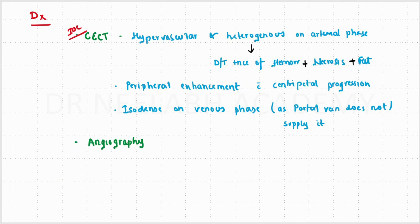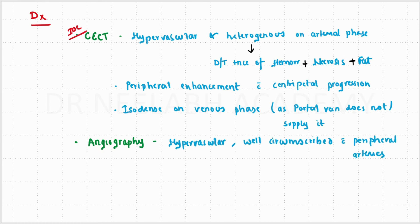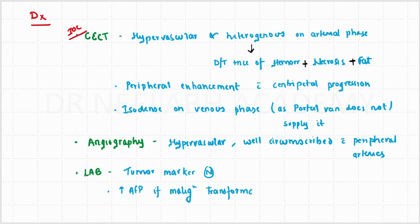Next can be angiography, on which we can see a hypervascular well-circumscribed lesion with peripheral arteries. On laboratory investigations, the tumor markers are normal. But if there is malignant transformation, alpha-fetoprotein may increase.